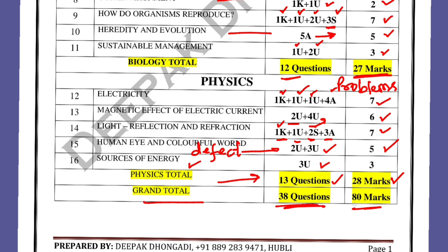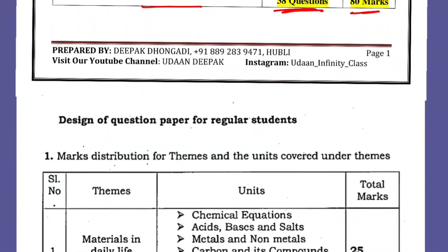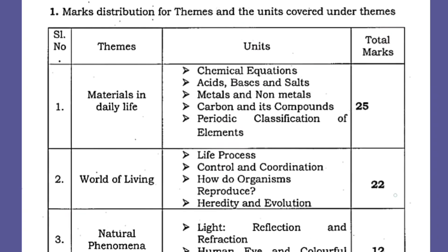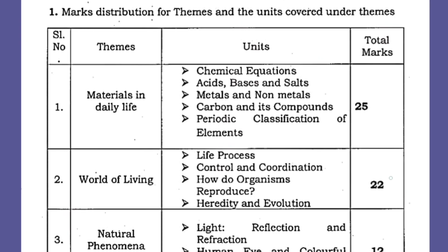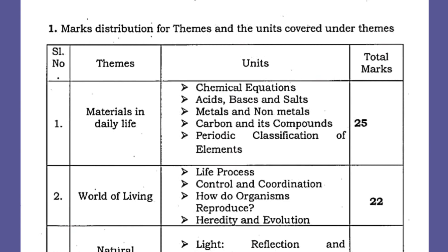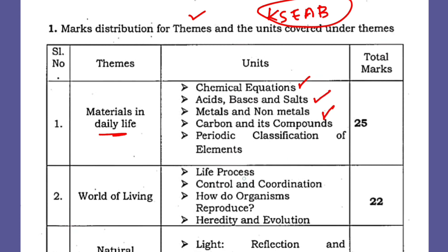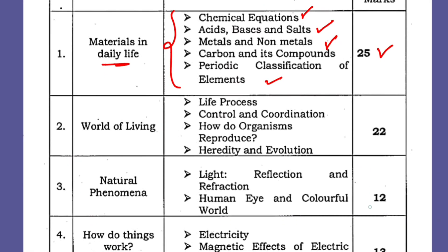Now we will see the design of the question paper for regular students. From this year the question paper is theme-based, as provided by KSEAB. The themes are: 'Materials in Daily Life' — covering Chemical Equations, Acids Bases and Salts, Metals and Non-metals, Carbon and its Compounds, and Periodic Classification — which is purely chemistry — so you can expect 25 marks from this theme.